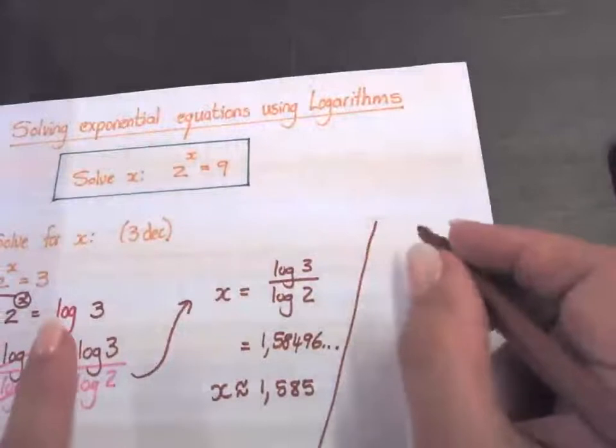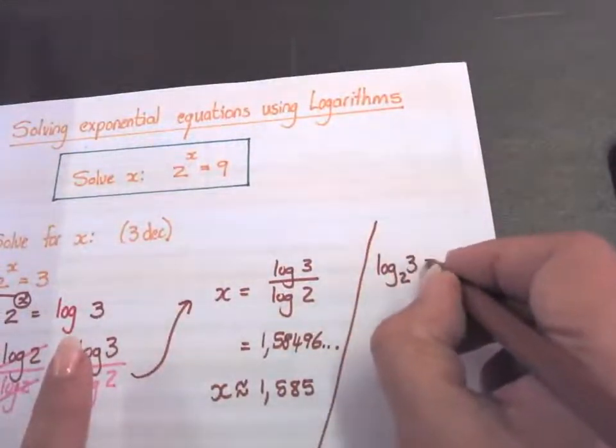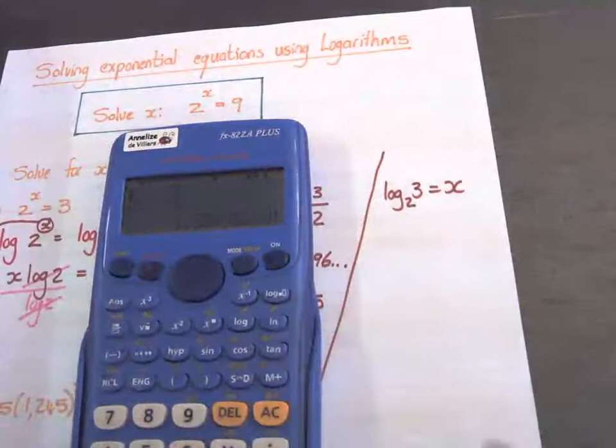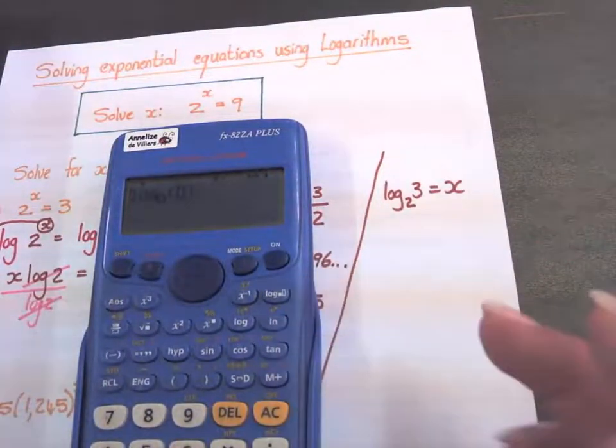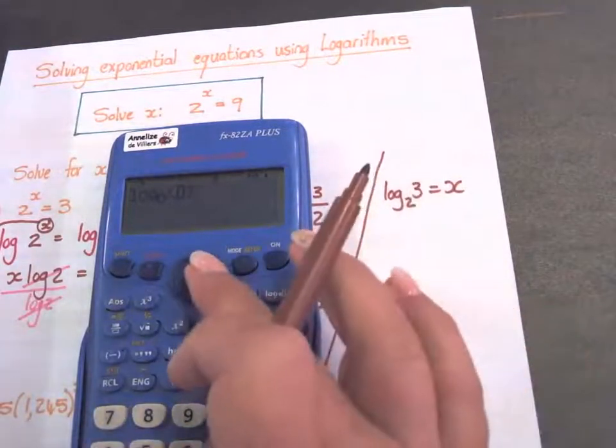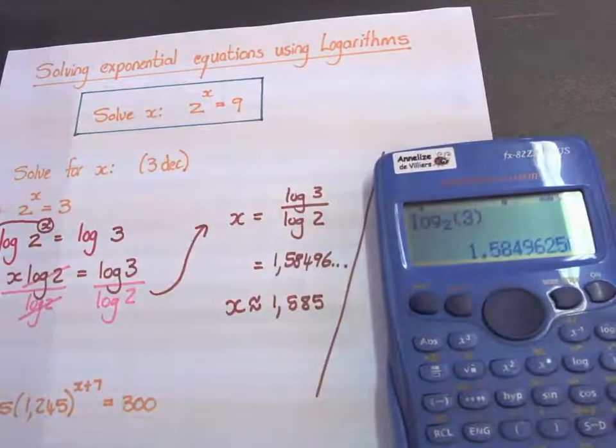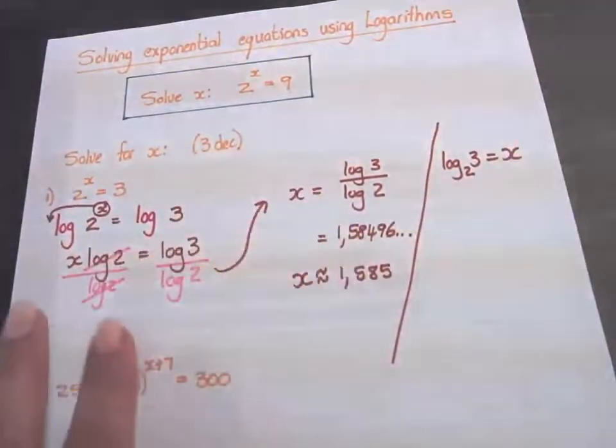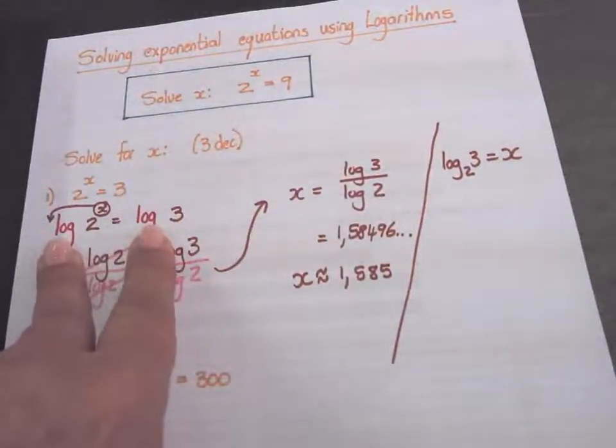You can either say log base 2 of 3 equals x. And now you type, you use that log because we have a base. And there you set 2, in the bracket we have 3, equals the same answer. I wanted to show you this method where you insert the logs because you're going to use that a lot further on.